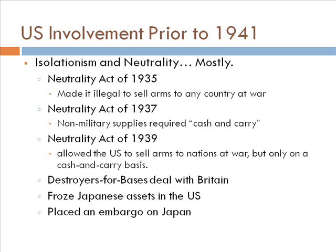In 1937 we passed the cash-and-carry idea — we would sell non-military supplies to countries on a cash-and-carry basis. The countries pay cash for it and they transport it. Then in 1939 we changed this a bit more — we could now sell military supplies and arms to nations at war, again on that cash-and-carry basis.